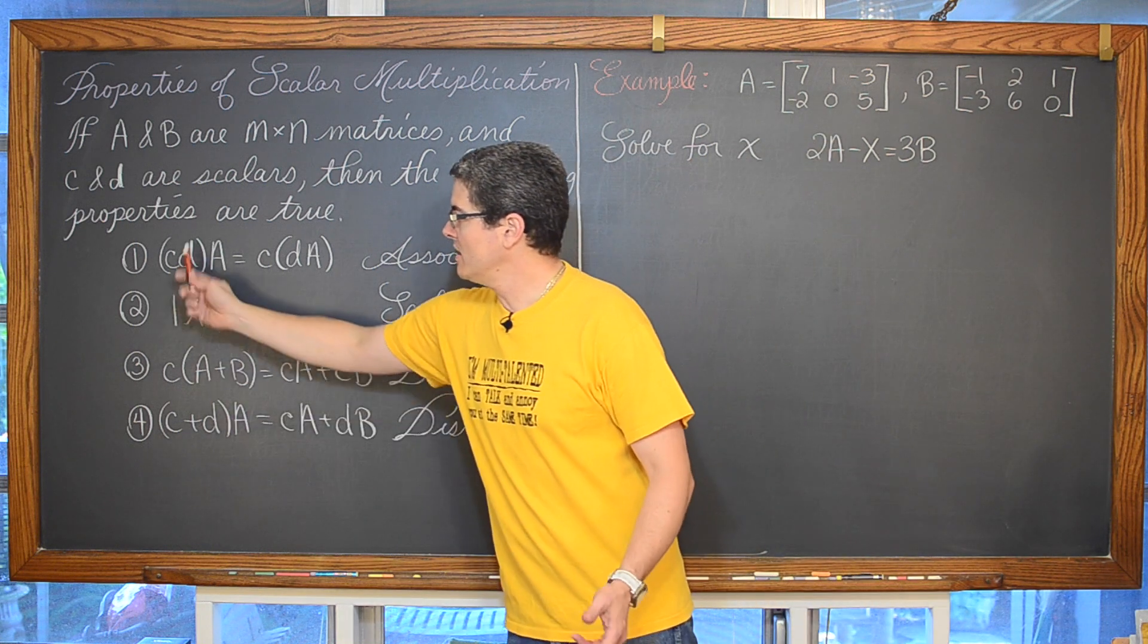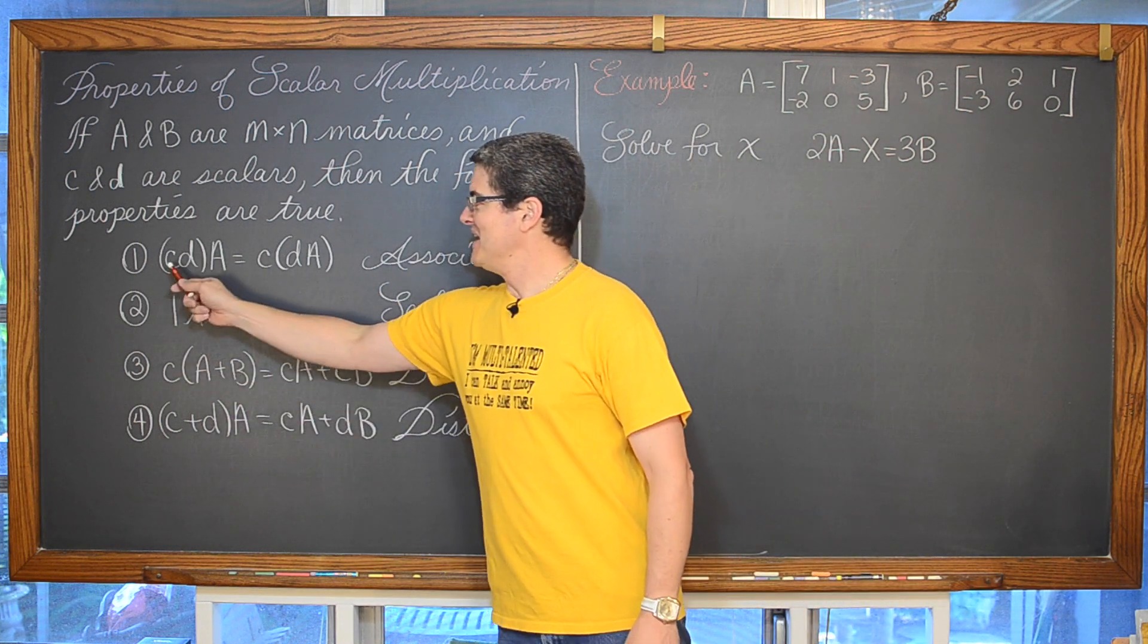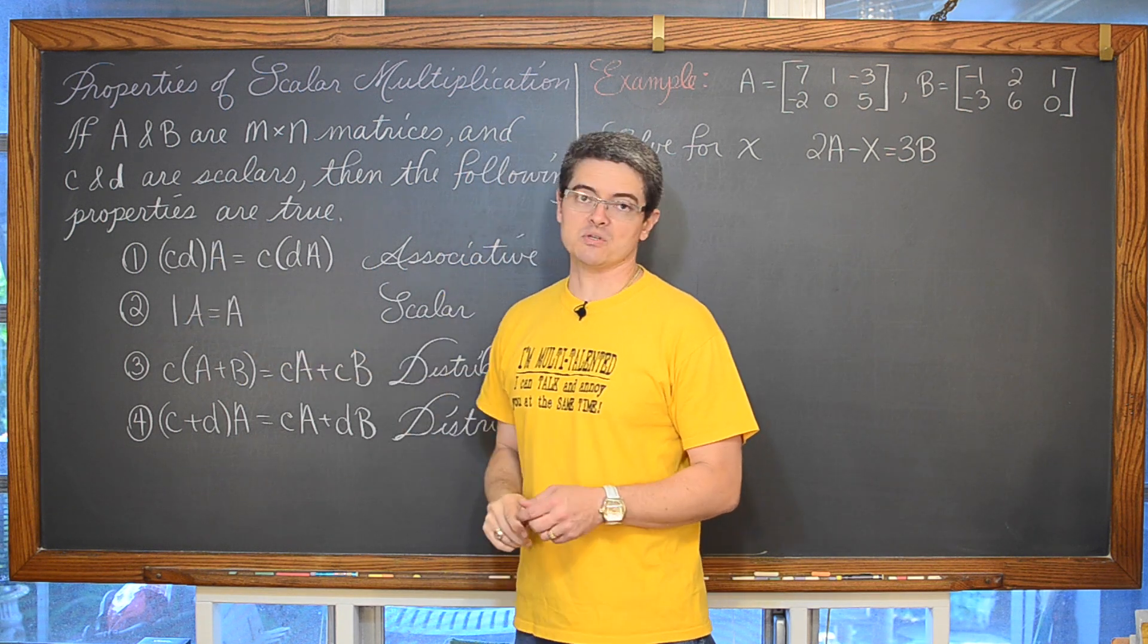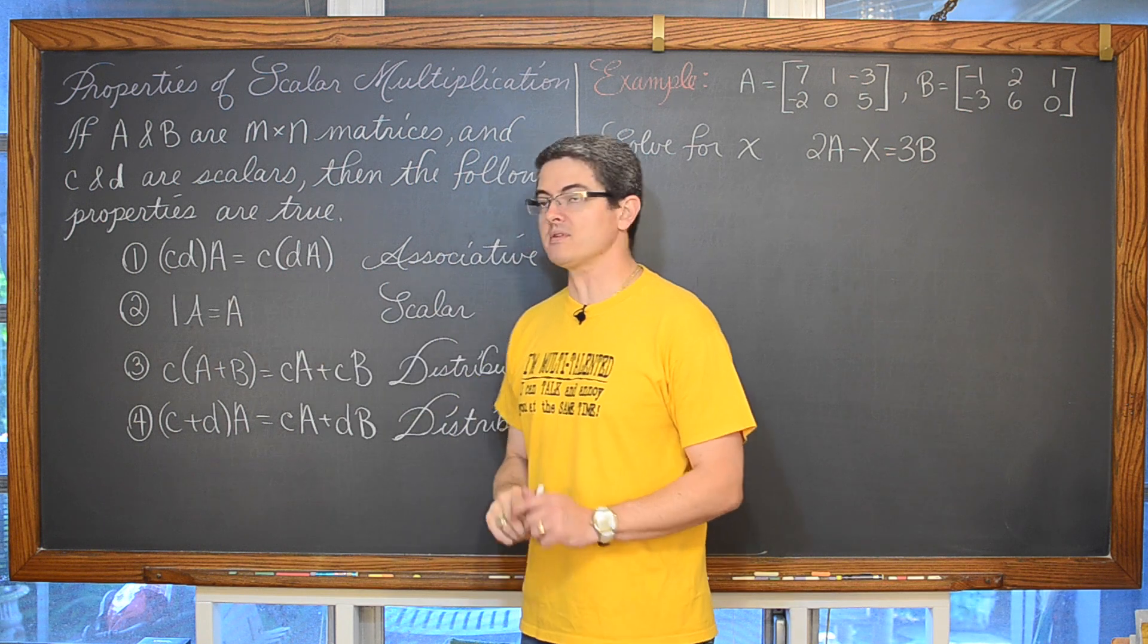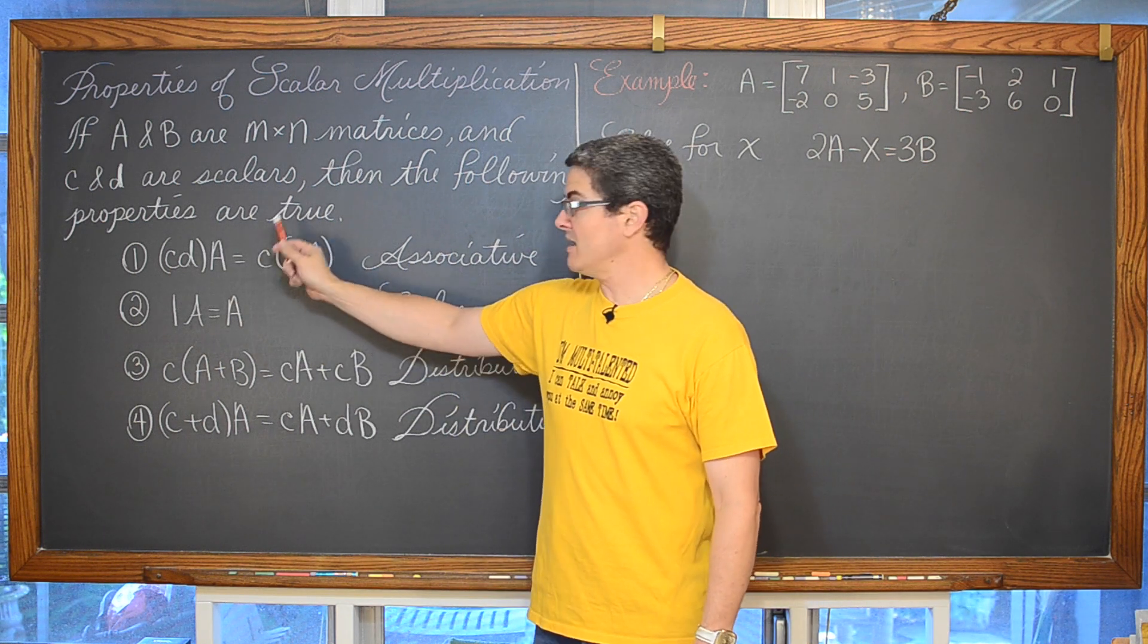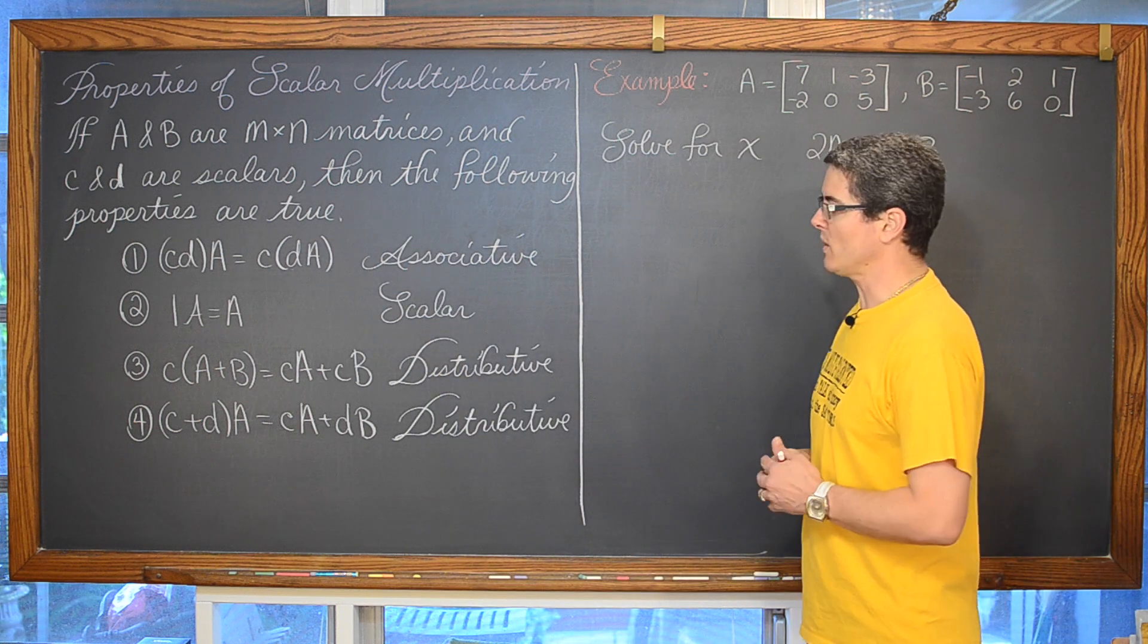We have this first property, which is the associative property. C times D, we can multiply those two scalars together and then apply them to matrix A. Or you can regroup those parentheses and maybe apply one of the two scalars to matrix A and then go back and apply the other scalar.